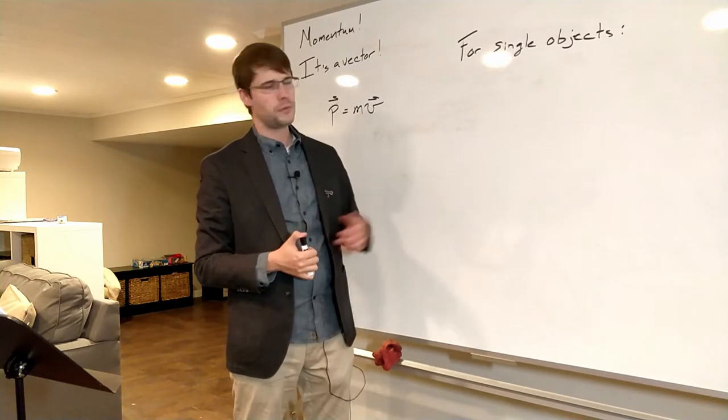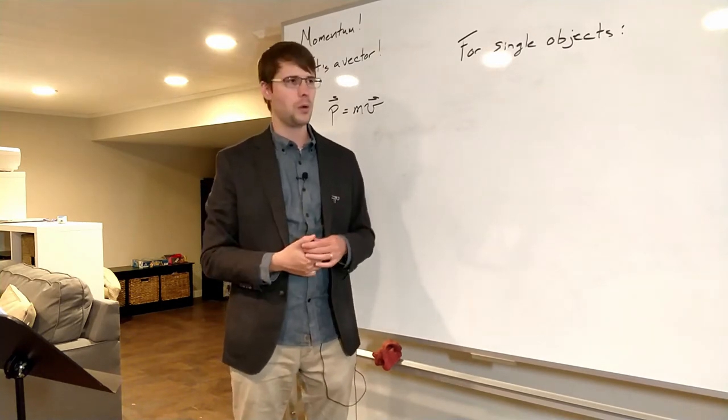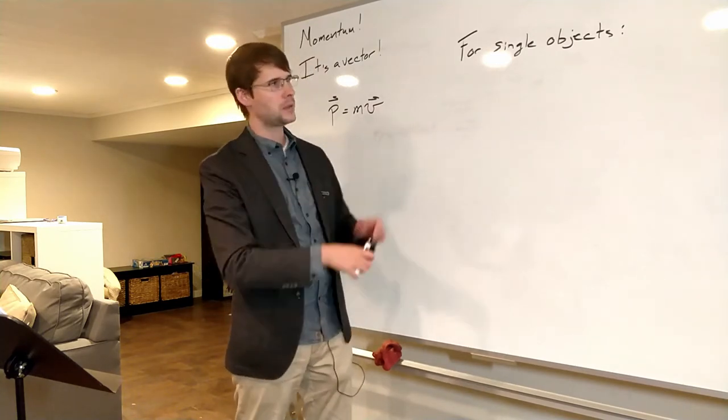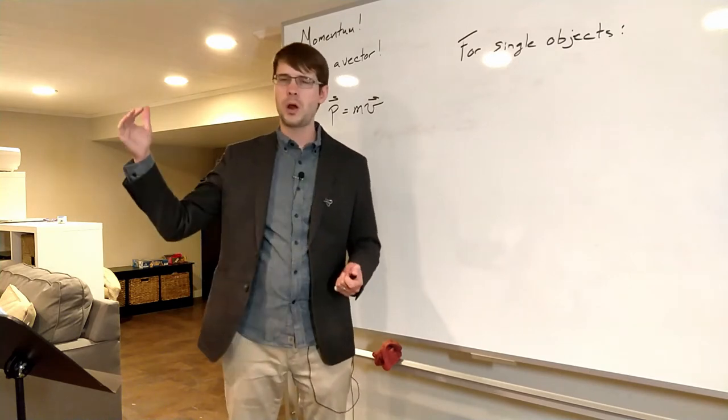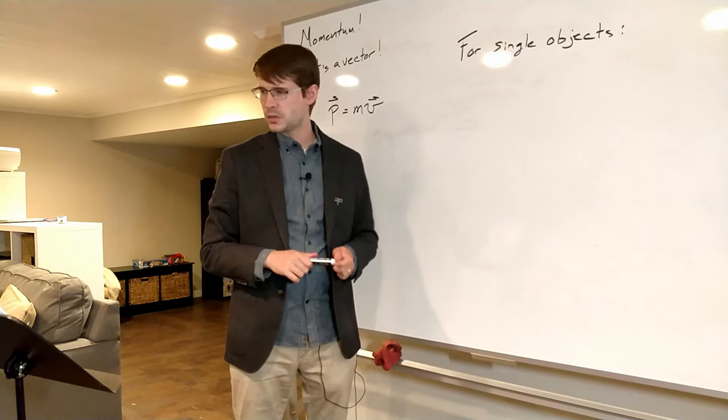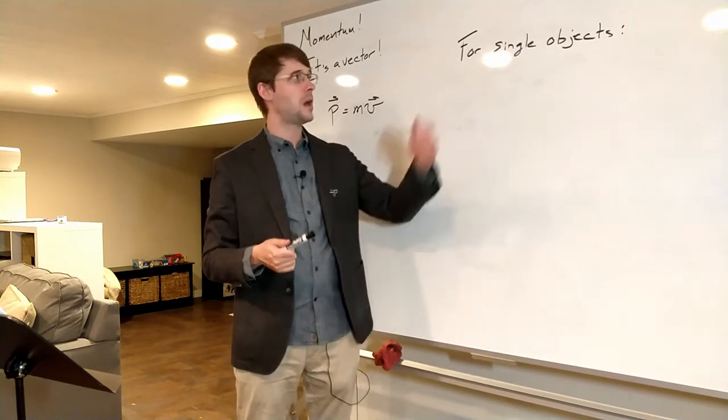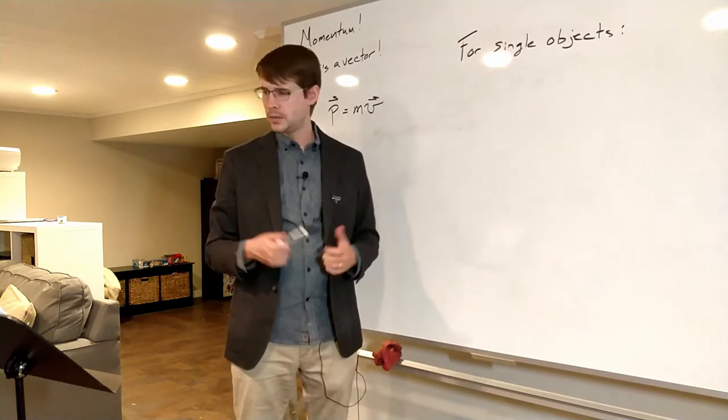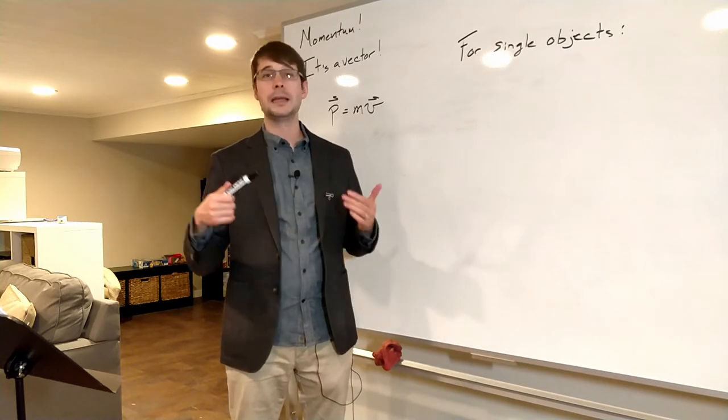We're looking here for a single object like a ball bouncing or somebody hitting a ball with a bat or a car crashing into a wall and stopping. These are the sorts of things that we would analyze using this model of single object momentum. What we're going to talk about for that is impulse.